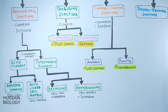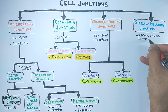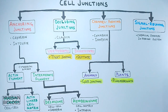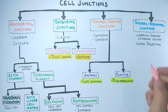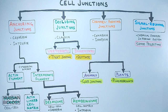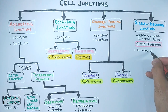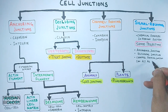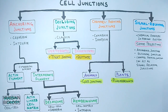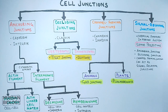Finally, we have signal relaying junctions, which can be any of the previous three junction types. Signal relaying junctions can transmit chemical synapses in the nervous system. There are specialized signal relaying junctions called shmoo projections, found in yeasts, that relay signals to other yeast cells. Note that anchoring junctions, occluding junctions, and channel forming junctions can all act as signal relaying junctions.